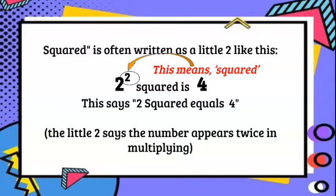And this says that 2 squared equals 4. And remember again, the little 2 says the number appears twice in multiplying.